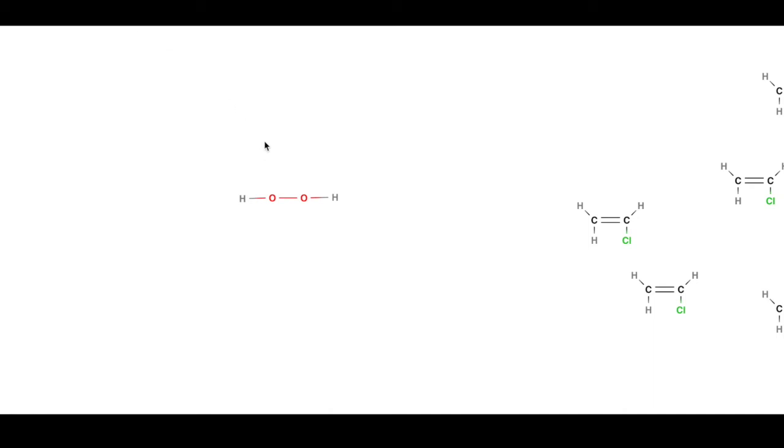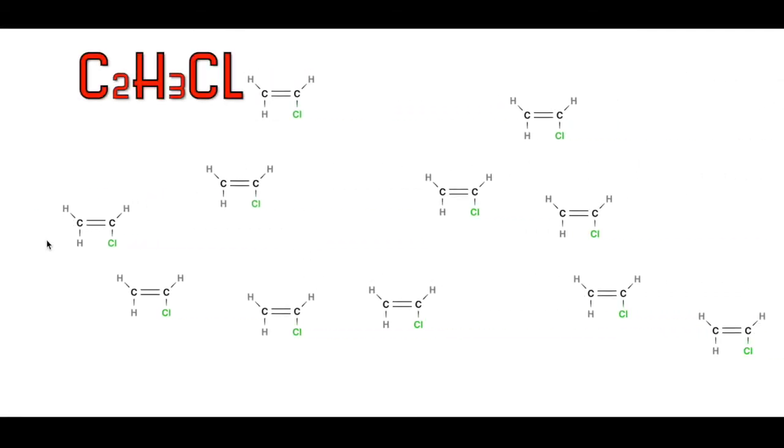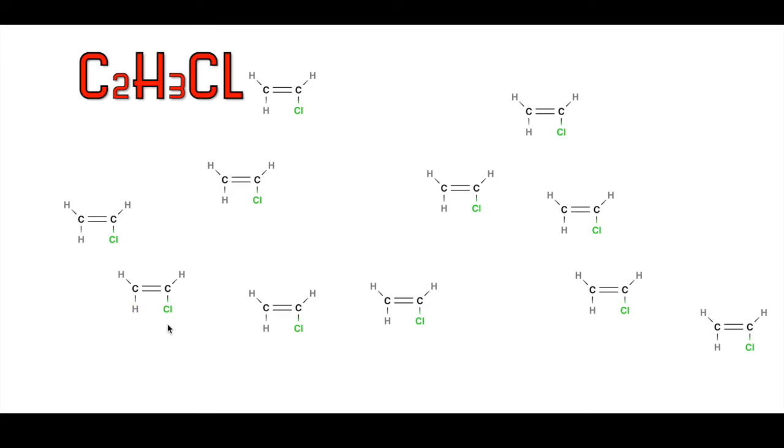Polyvinyl chloride is made by addition polymerization. For this to take place, an initiator and chloroethene monomers are required. Chloroethene is also known as vinyl chloride.